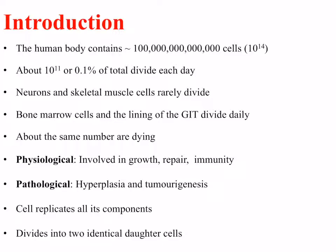So why do we need cells to divide? A lot of them are obviously involved in growth, but others are involved in repair processes and also in defence of our body via the immune system. In some instances, division of cells can be dangerous and lead to hyperplasia, and in some conditions lead to the formation of tumours or tumourogenesis.